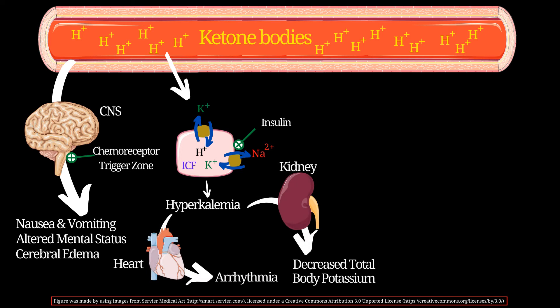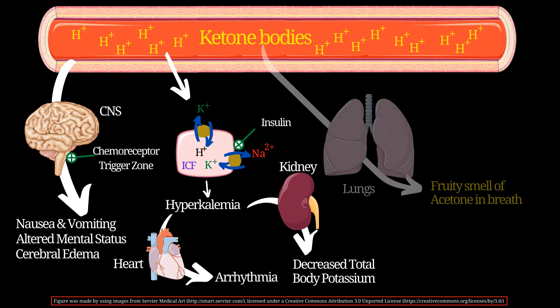Hyperkalemia can in turn cause arrhythmia. Additionally, the increased potassium levels are filtered by the kidneys, which lowers total body potassium levels. So although hyperkalemia exists due to potassium shifting from intracellular to extracellular fluid, total body potassium levels are still dropping as they are constantly being filtered out by the kidneys.